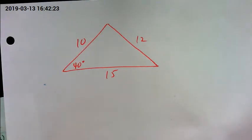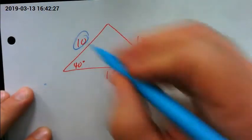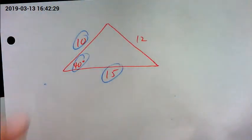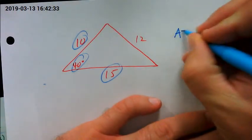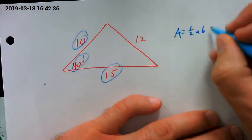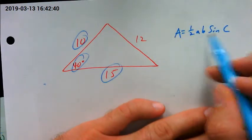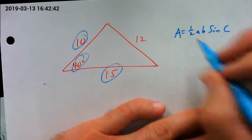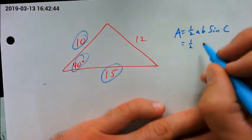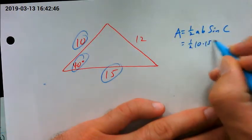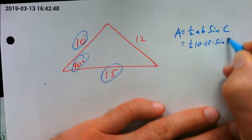The way I could find my area is by using the two sides and the included angle. So my formula is one half AB sine of C, meaning we have two sides and the angle that's between them. So all it is is one half times 10 times 15 times sine of 40.